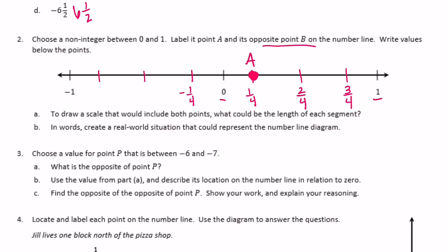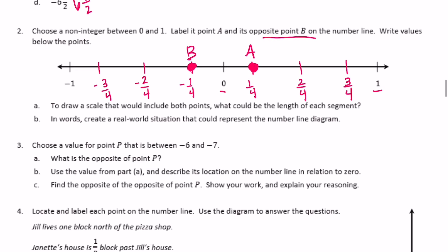Negative 1 fourth, negative 2 fourths, negative 3 fourths — so the opposite is right there, and it is B. To draw a scale that would include both points, the length of each segment is 1 fourth — one fourth in words.